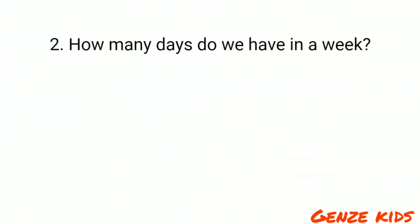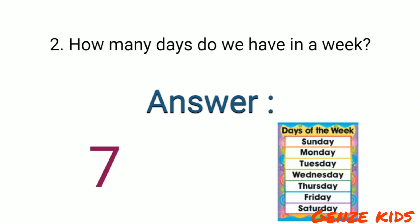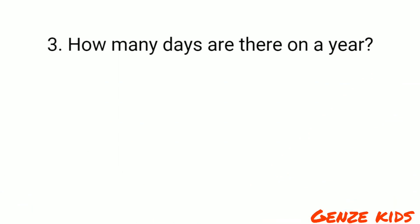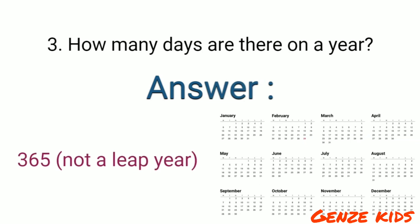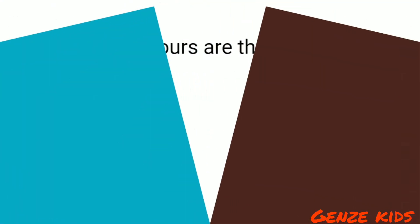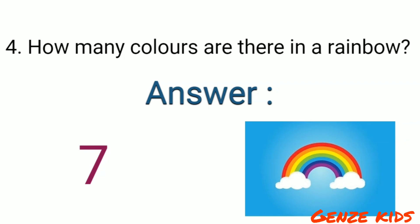How many days do we have in a week? Seven days. How many days are there in a year? 365 if it is not a leap year. How many colors are there in a rainbow? Seven colors.